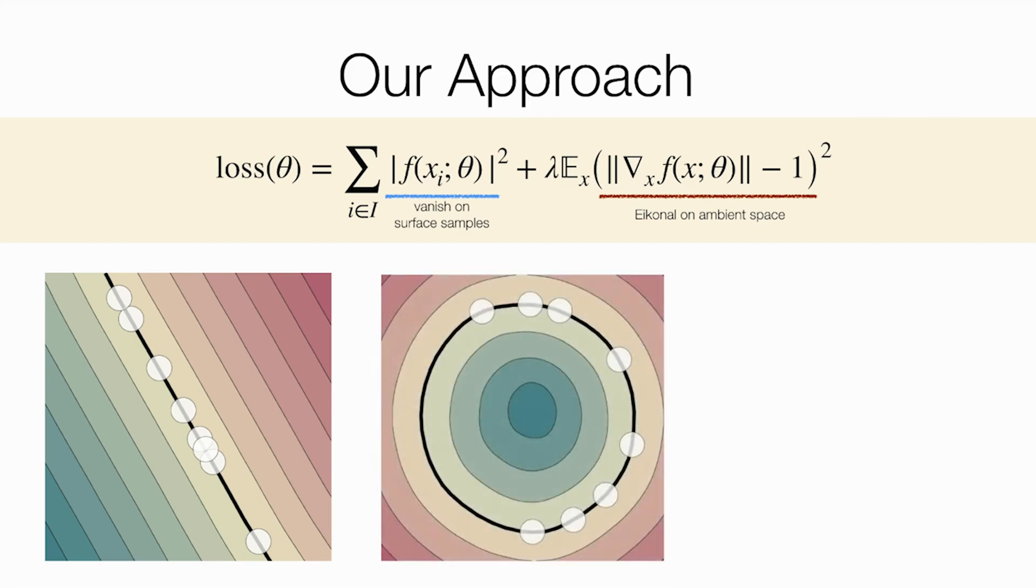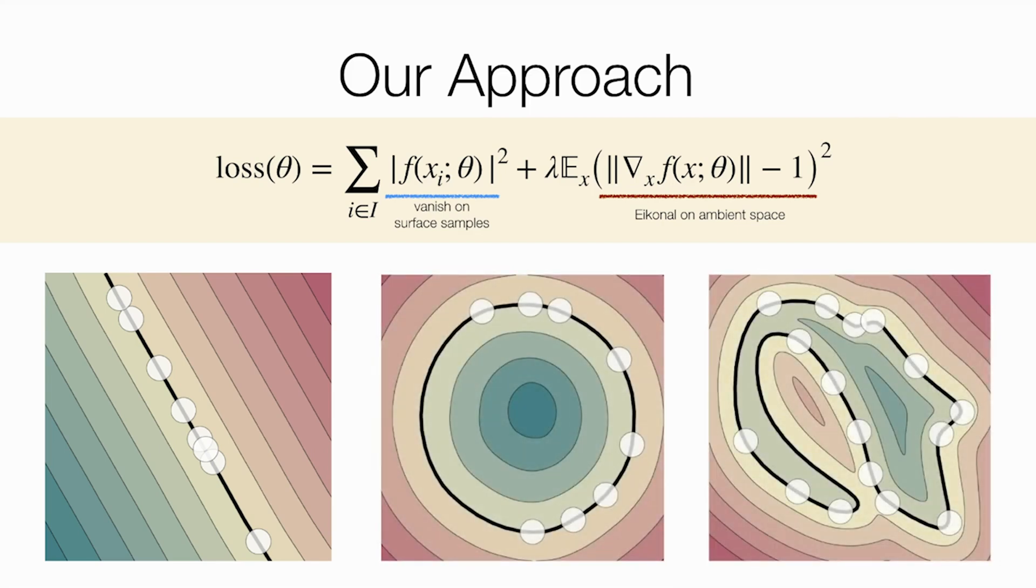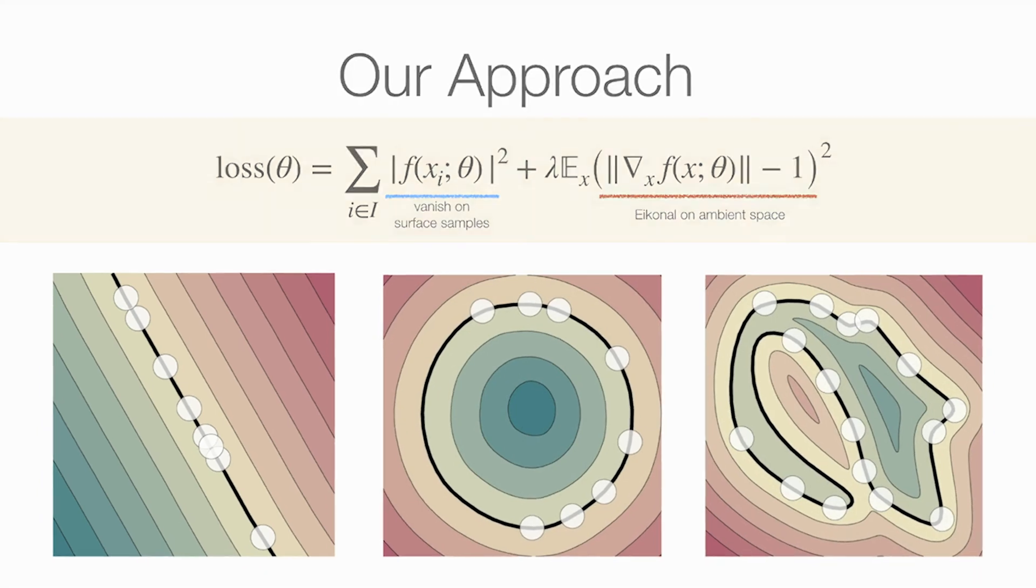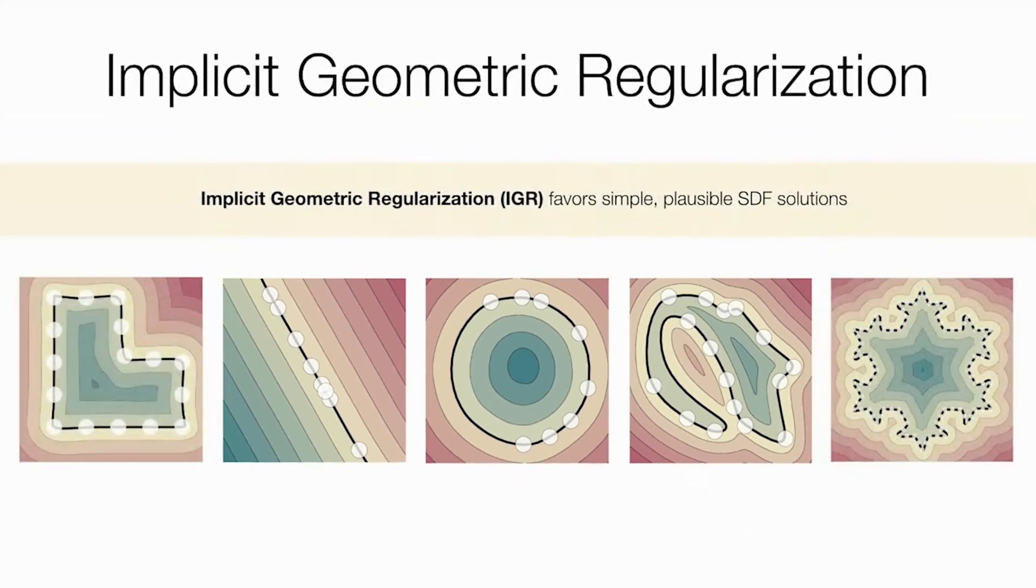This is indeed the case for other inputs as well. This leads us to the natural question of identifying the origin of this phenomenon. We believe that our model enjoys a geometric version of the well-known implicit regularization phenomena in neural network optimization. We call this in short IGR. To support this conjecture, we provide some theoretical analysis for the linear case, which is still non-convex.